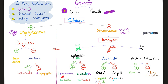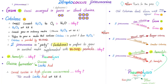Streptococcus pneumoniae is a gram-positive coccus that is catalase-negative. It is alpha-hemolytic, sensitive to optochin, and soluble in bile. Sometimes it appears in pairs — we call it diplococci — or short chains.